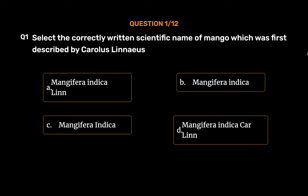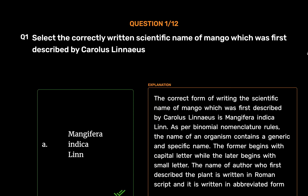The correct answer is Option A: Mangifera indica L. The correct form of writing the scientific name of mango which was first described by Carolus Linnaeus is Mangifera indica L. As per binomial nomenclature rules, the name of an organism contains a generic and specific name. The former begins with a capital letter while the latter begins with a small letter. The name of the author who first described the plant is written in Roman script and it is written in abbreviated form.